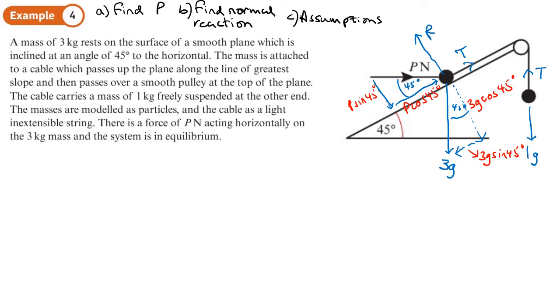So let's start with looking at the forces going perpendicular to the plane. Now, what do we have? We have r that goes up. This is all in equilibrium. It says here. And that will equal the p sin 45 and the 3g cos 45 going down. So we're going to write all our equations and then we'll solve them in a minute. We're now going to look at the forces which are parallel to the slope. So that's going to be the p cos 45, which is going up the slope. And the t is going up the slope.